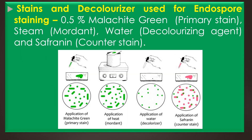The stains and decolorizers used for the endospore staining are 0.5% malachite green as the primary stain, steam acting as a mordant, water acting as the decolorizing agent, and safranine acting as the counter stain. In the Schaffer-Fulton method, the malachite green primary stain along with steam heat as a mordant softens the endospore covering, allowing penetration of the dye into the spores.